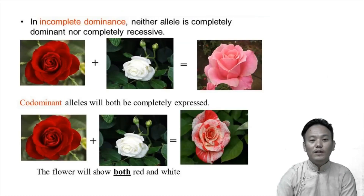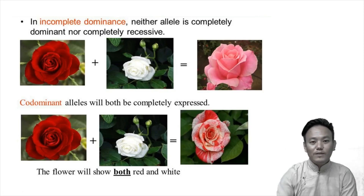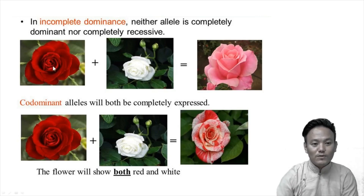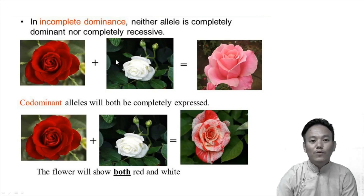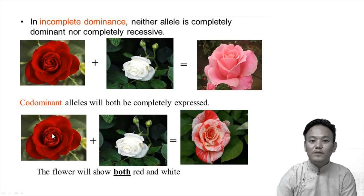This picture clarifies the difference between incomplete dominance and co-dominance. In incomplete dominance, neither allele is completely dominant, so the F1 individual has a phenotype intermediate between the two parents — a red flower crossed with a white flower gives a pink flower. In co-dominance, the alleles for red and white flower color are both equally dominant, so both express in the F1 generation: the flower petals show both red color and white color.